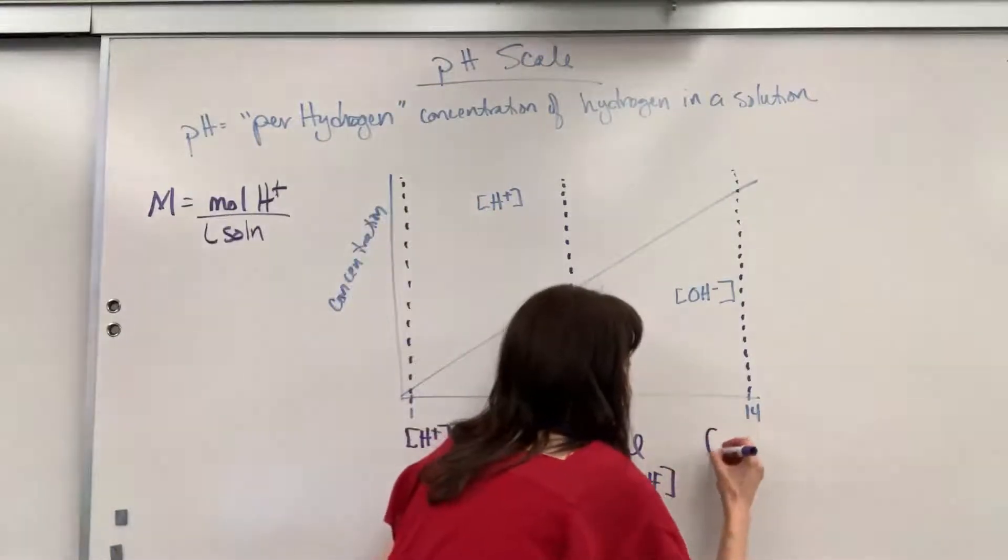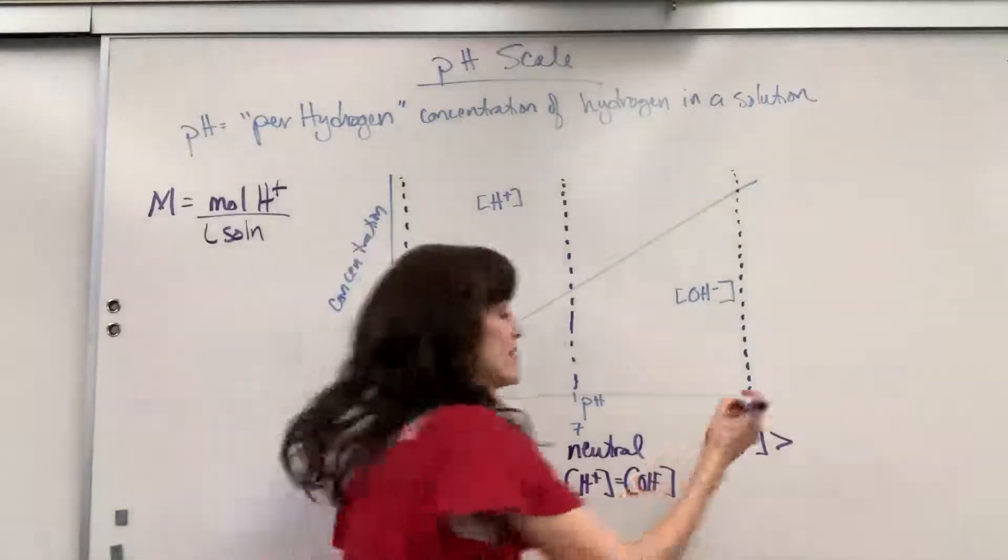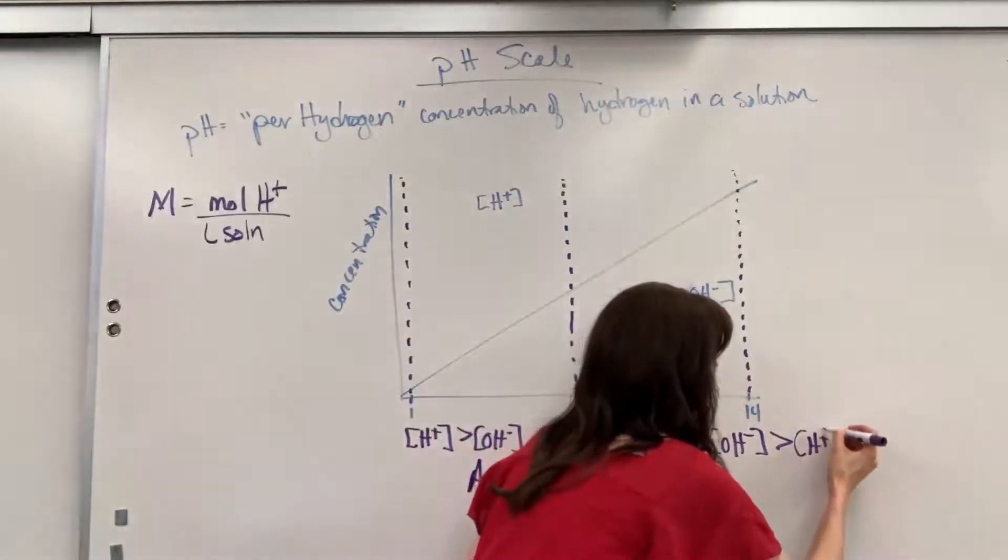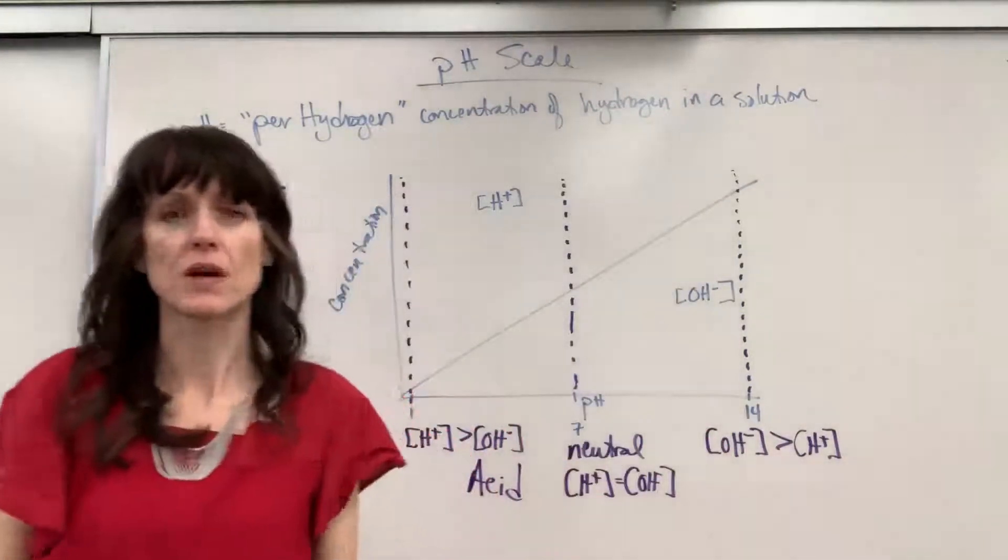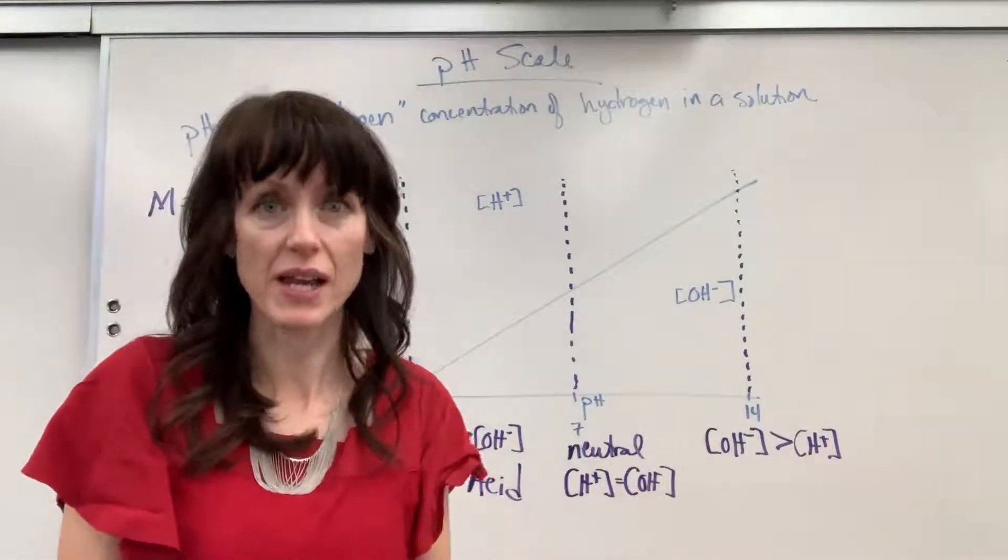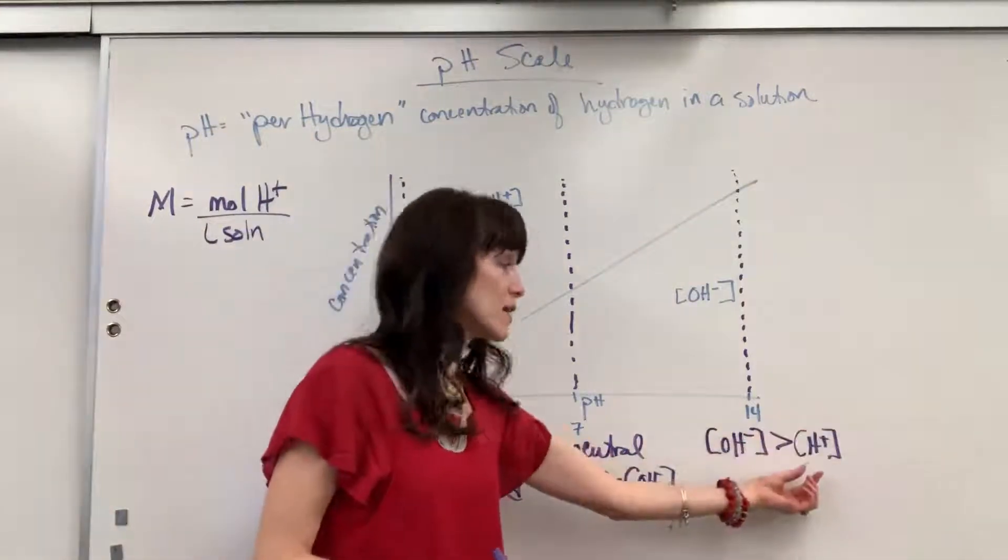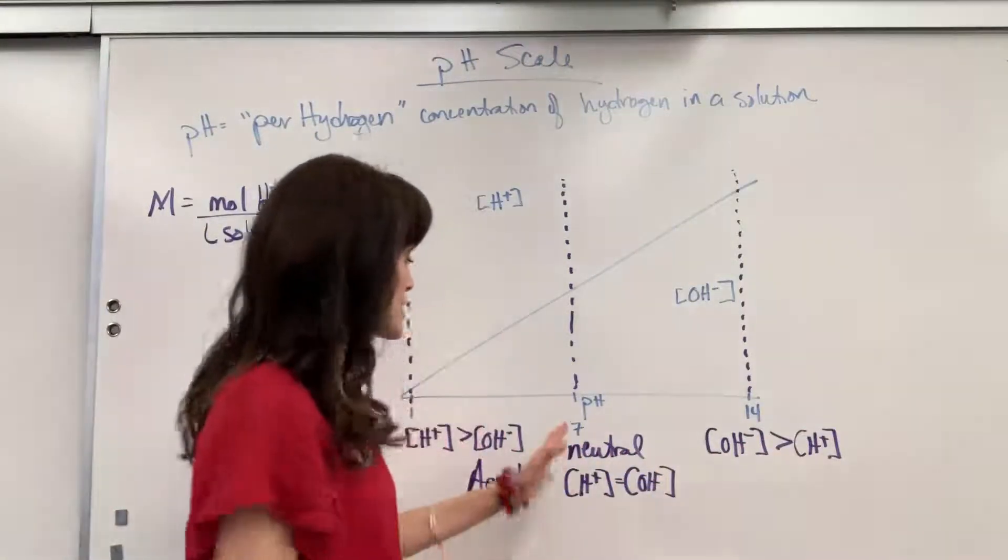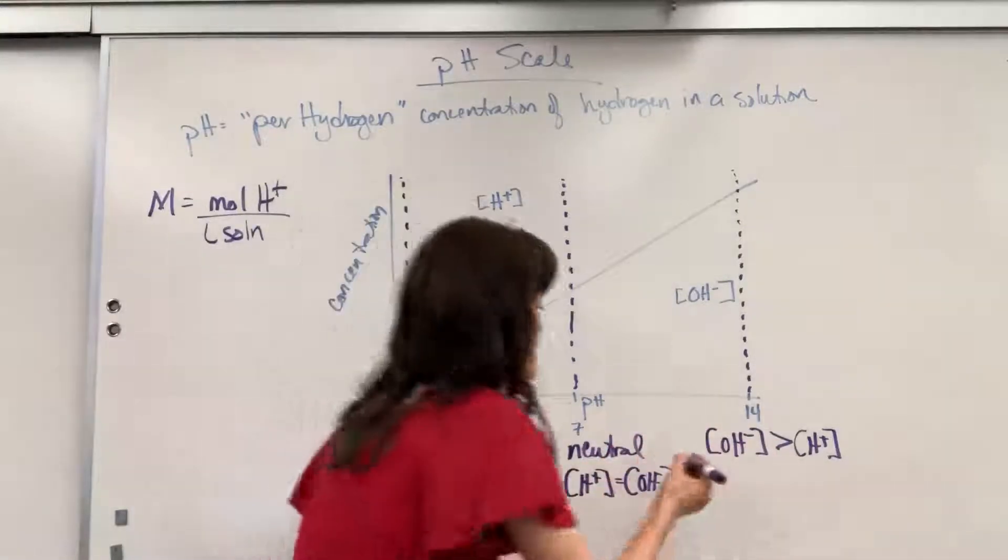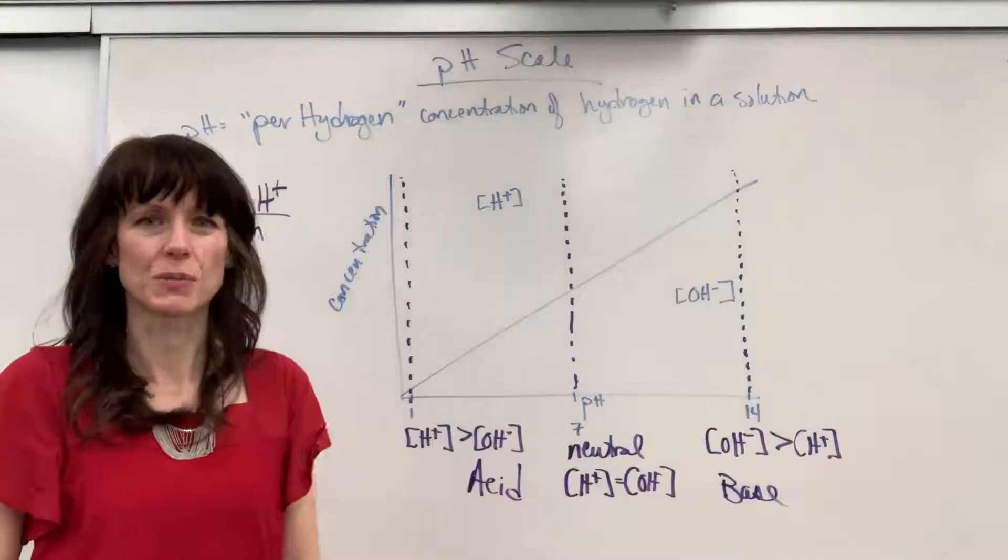So what's our takeaway? For anything that's a base, the hydroxide concentration is greater than the hydrogen concentration. And really, to drive this home, remember when we have a base, it doesn't mean that we don't have any hydrogen ion. It just means that the hydroxide concentration is greater than the hydrogen concentration. And of course, anything above a 7 is going to be considered a base.